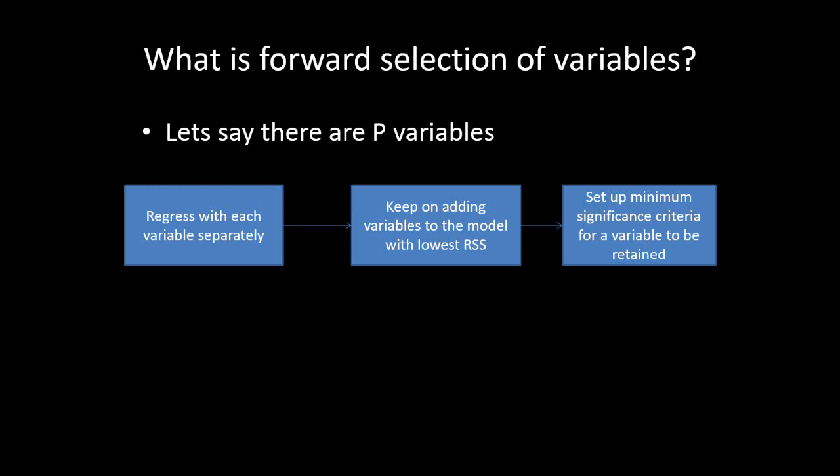Let's say there are p number of independent variables. In forward selection, what is usually done is we first regress the dependent variable with each of these p independent variables. When there is only one independent variable involved in a regression, we call it a simple linear regression. So we perform p number of simple linear regressions in the first step, and then we compute the residual sum of squares, known as RSS, for each of these models.